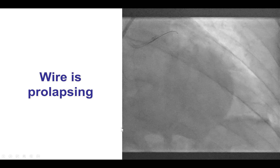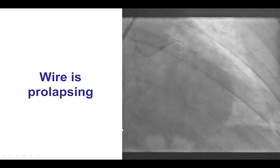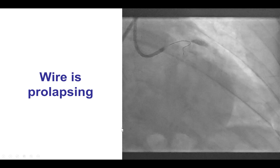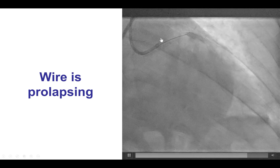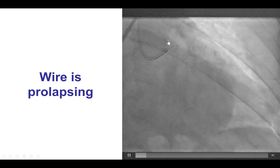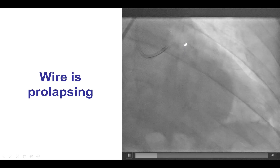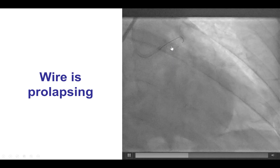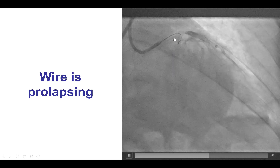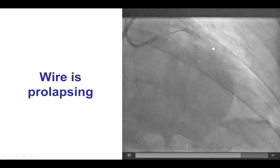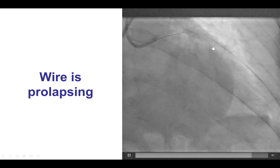Before doing stenting, however, we have to advance wires across the lesion, and this is one of the challenges of the case. There is significant tortuosity — a more than 90-degree angle to go from the left main into the circumflex — and one of the potential problems when trying to advance wires through these bends is that the wire tends to prolapse into the main vessel.